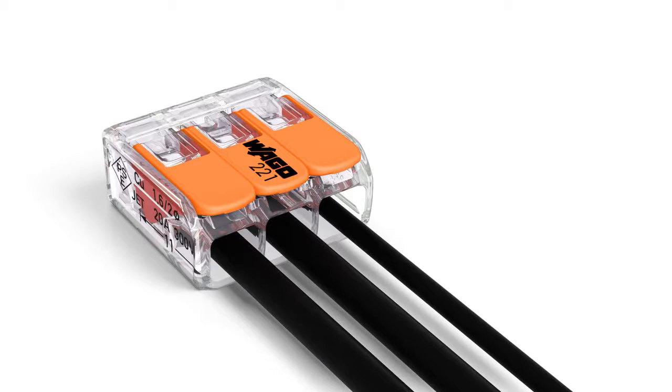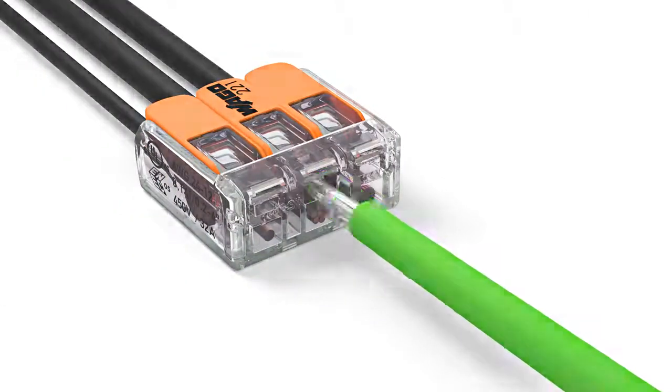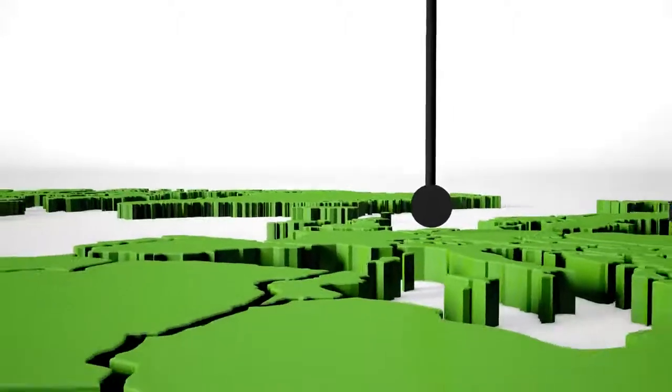The completely closed housing covers all live parts or conductors, providing a high level of protection against accidental contact. Two easily accessible test slots, one in the conductor entry direction and one opposite this, provide easy test conditions even when installed.